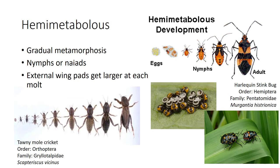Hemimetabolous is gradual metamorphosis. The nymphs are newly emerged immatures, called naiads in aquatic groups. The immatures are generally similar to adults and eat similar foods. The wing pads develop after a couple of molts and get progressively larger after each molt until adulthood. Since their wings develop externally, they are called exopterygotes. It occurs in orders such as Hemiptera, Orthoptera, Mantodea, Blattodea, Thysanoptera, and others.